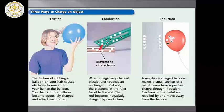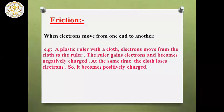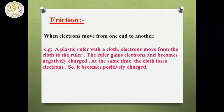So we have three ways to charge an object: friction, induction, and conduction. By friction, electrons move from one object to another — for example, a plastic ruler rubbed with clothes. The electrons move from the clothes to the ruler, so the ruler gains electrons and becomes negatively charged, while the clothes loses electrons and becomes positively charged.